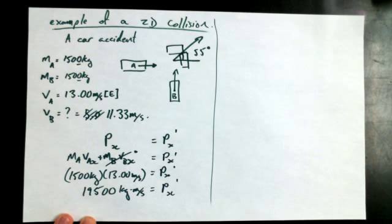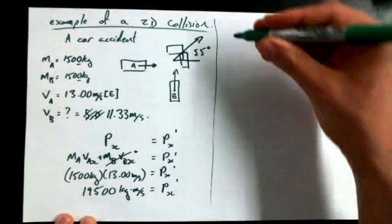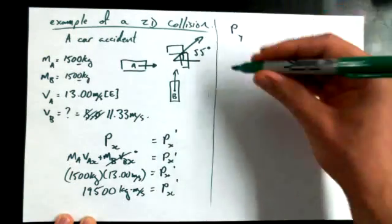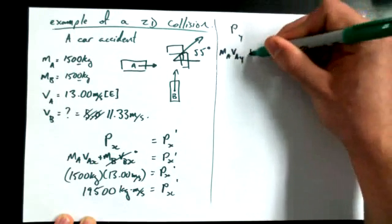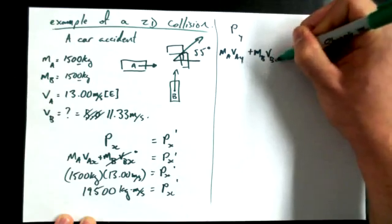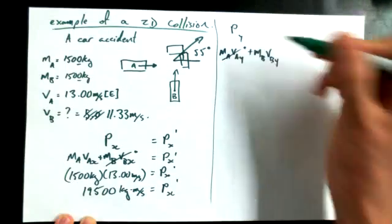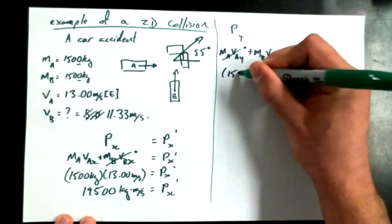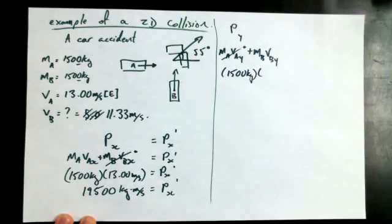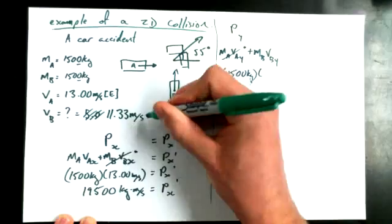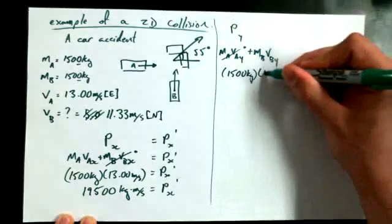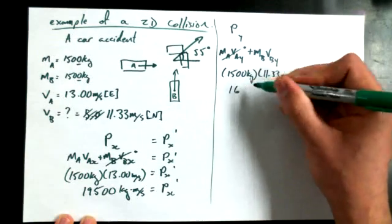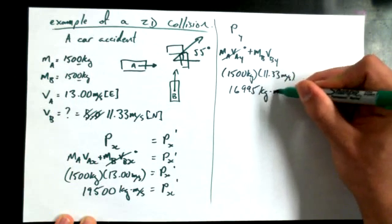Let's talk about the Y component according to what car B claimed. Car B claimed that we're going at 11.33 meters per second, which is a pretty specific claim. Momentum Y was equal to mass A V_A_Y plus mass B V_B_Y. And of course we say that V_A_Y was equal to zero, so the momentum for object A in the Y direction is equal to zero. So we've got mass B, again 1,500 kilograms, times V_B_Y. This person claims they're going at 11.33 meters per second. I should have said north. 16,995 kilogram meters per second.